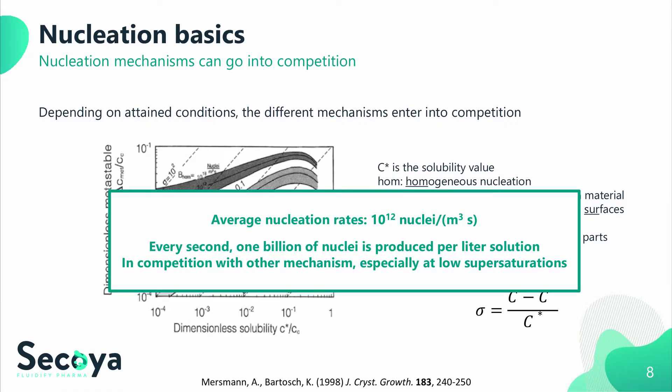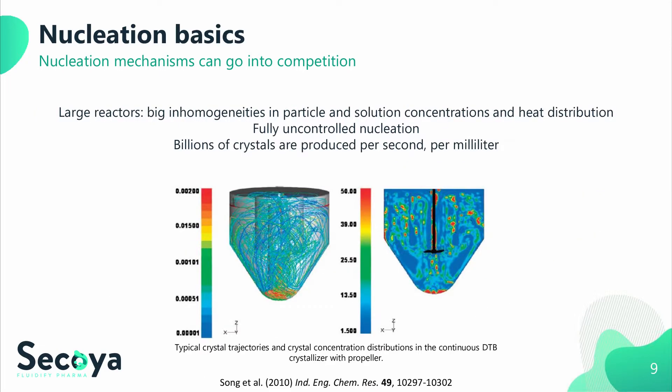In general nucleation theory, on average 1 billion crystals per milliliter per second can be expected for any nucleation mechanism. As all these created crystals need to undergo identical conditions when a narrow crystal size distribution is expected, in large volume reactors this is very difficult to achieve. When you look at large batch systems and their inherent inhomogeneities in temperature and concentration profiles, nucleation will run out of hand very rapidly.